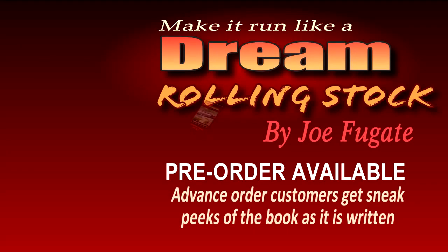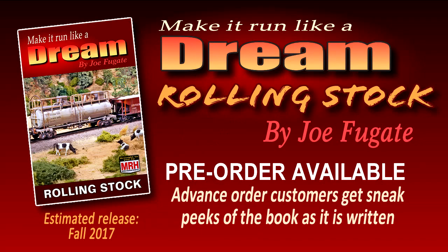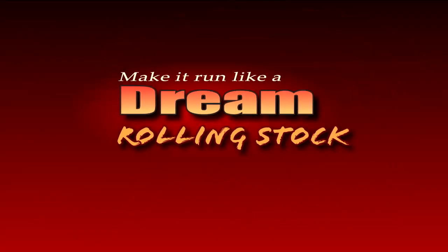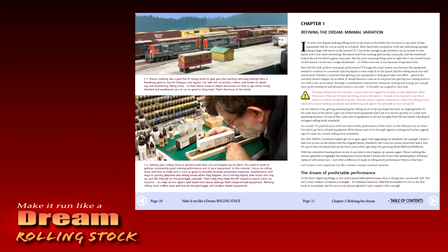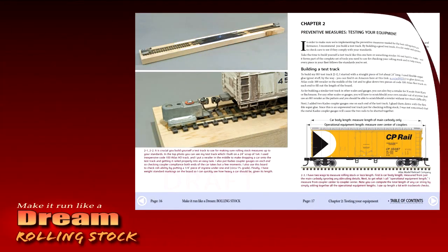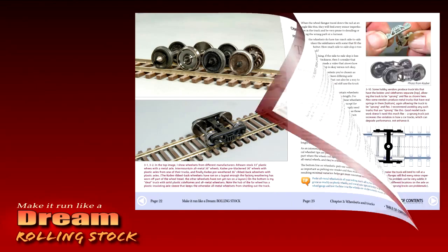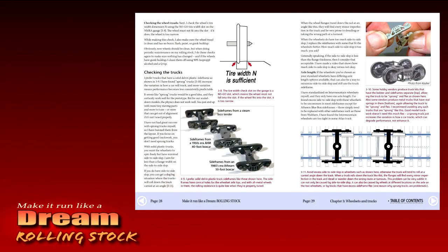In my Run Like a Dream book series, I explore lesser-known expert tricks for getting tip-top performance on your model railroad. One of the topics I'm exploring in book two of the series, Rolling Stock, is wheel sets having too much side-to-side slop in the trucks.